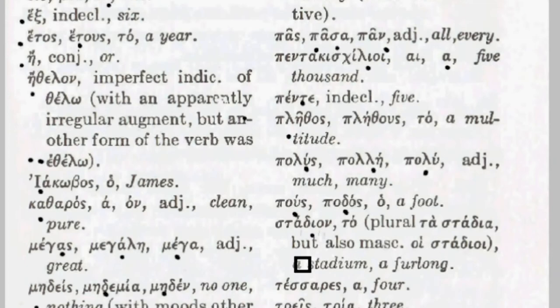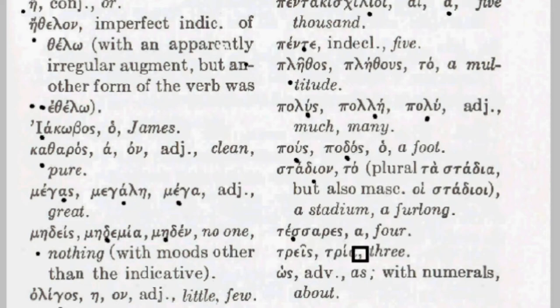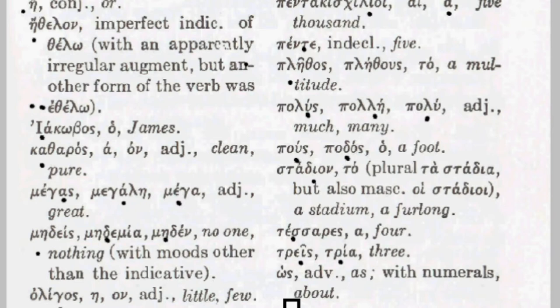Stadion is a word that means a stadium or a furlong — about 220 yards, commonly used in the New Testament to describe a certain distance. Then we have tessares, tessares, meaning four. And tres, tria is the word for three — we have various words that use the tri prefix to stand for three, like a tripartite agreement. Finally, hōs is a word meaning 'about' when used with numerals — about five, or about five thousand.